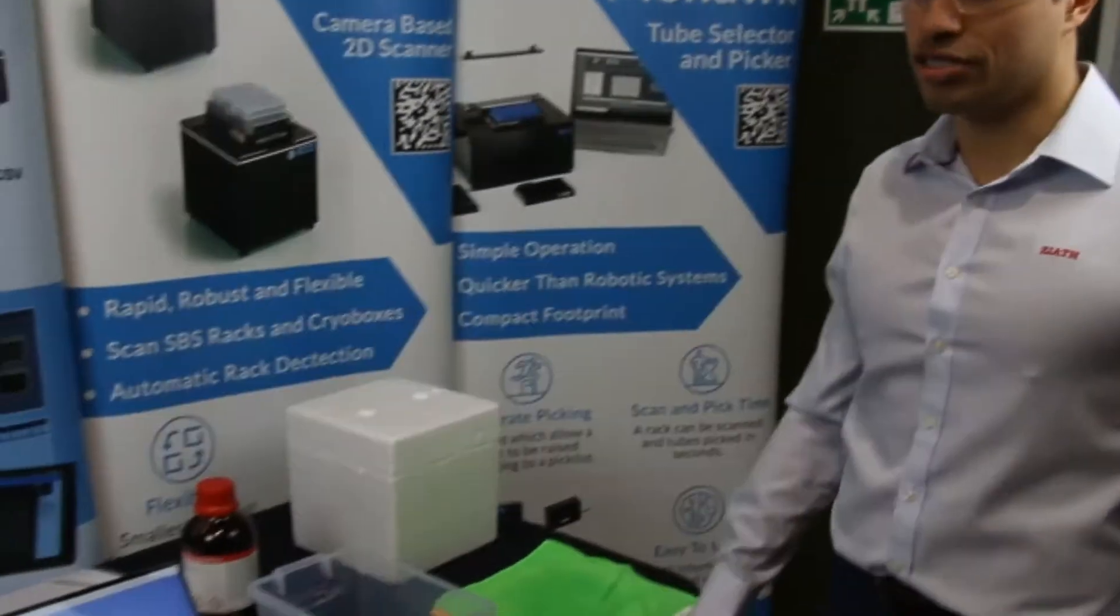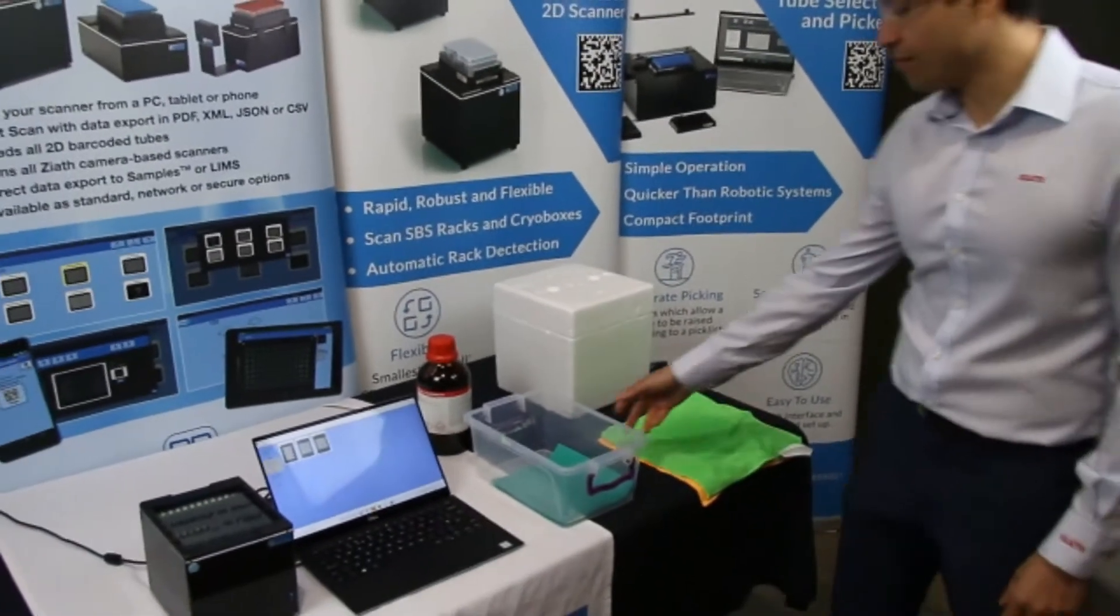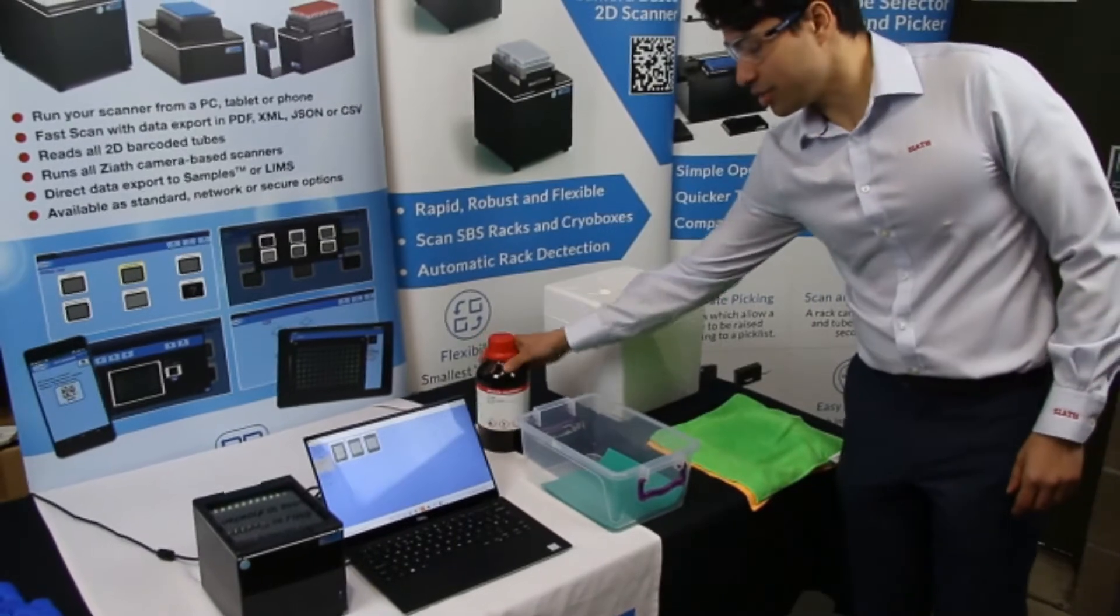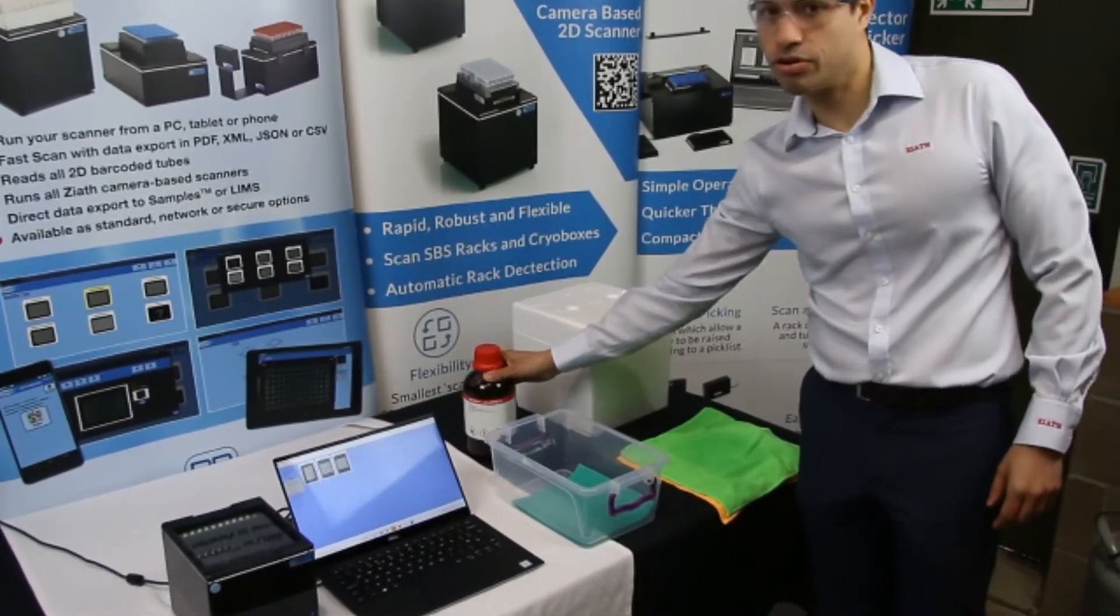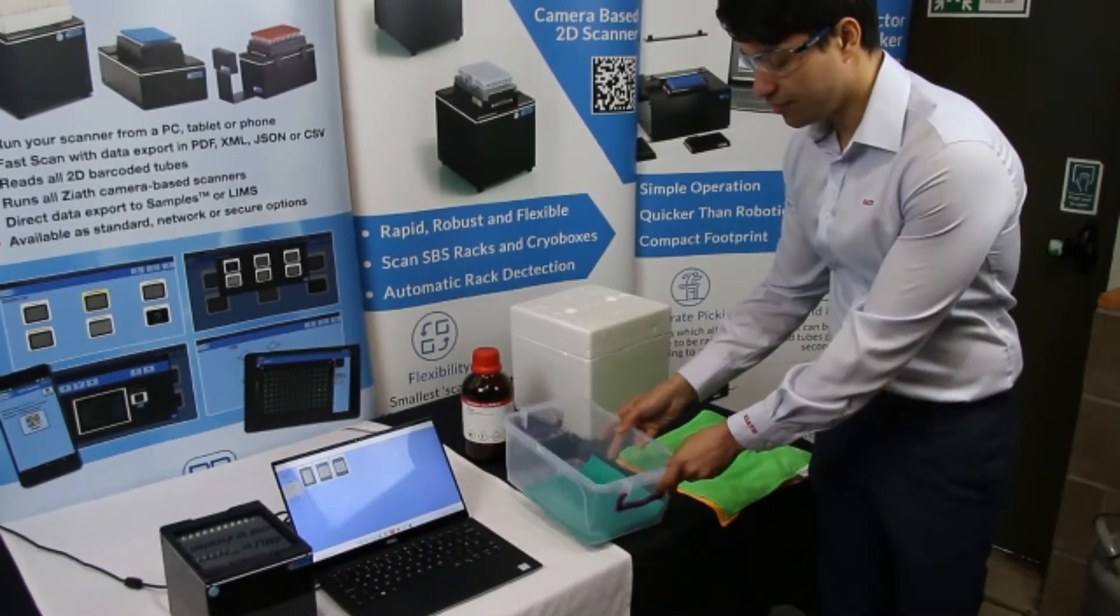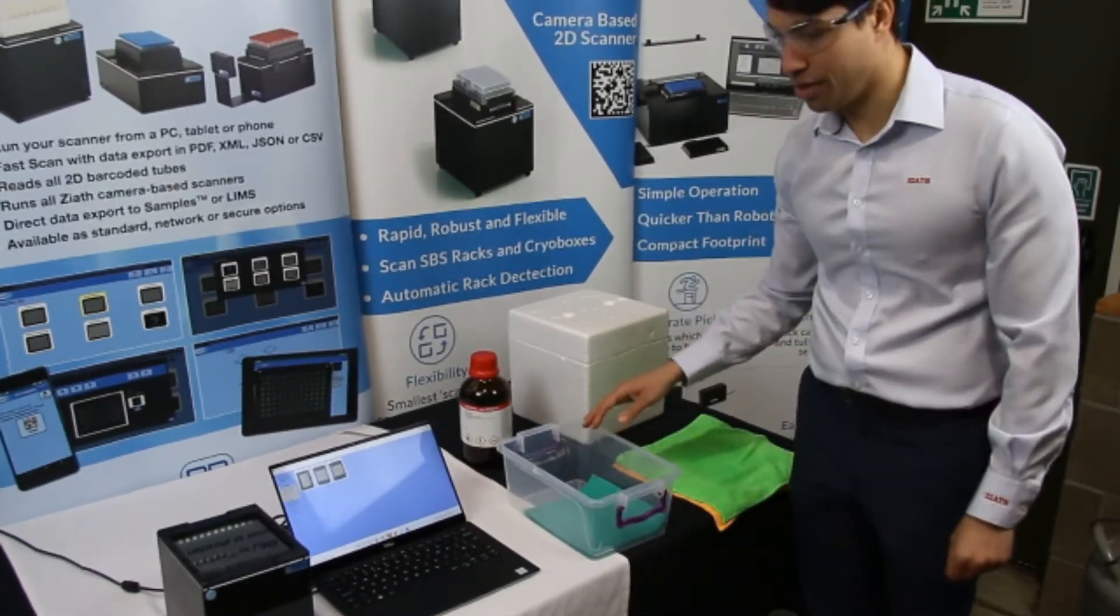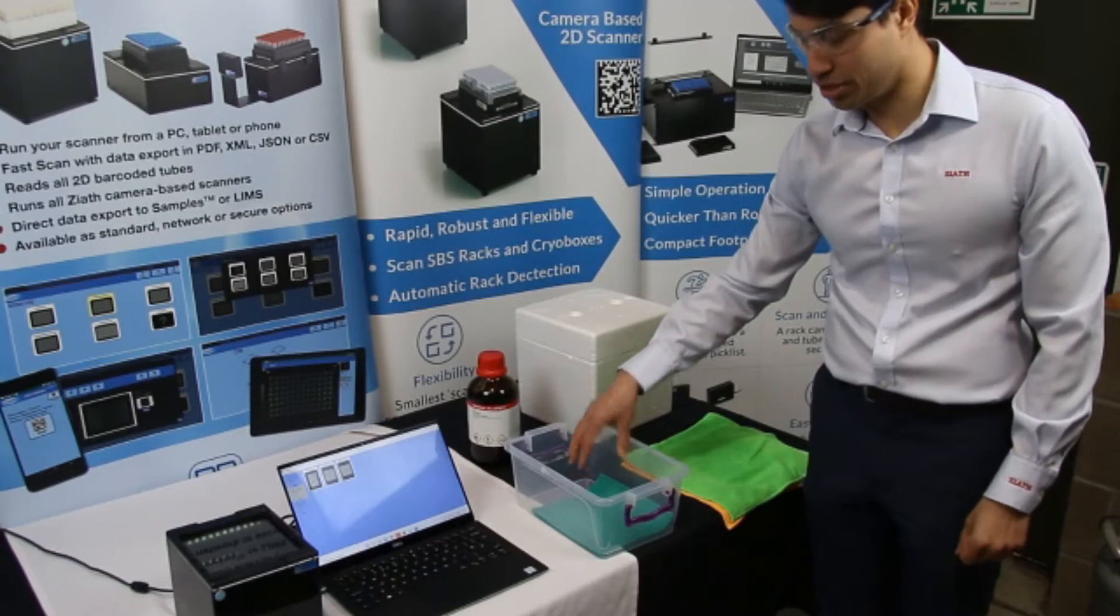On the table we have our liquid nitrogen station prepared where we have an ethanol bath which contains 100% ethanol. Do try and use 100% ethanol where possible. The bath is filled up with a layer of ethanol and the sponge is submerged in the ethanol.